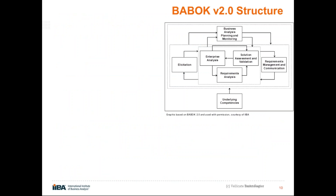Let's see how IIBA has changed the structure of BABOK to meet this enhanced role of a business analyst. This was the structure of BABOK 2.0, which had six knowledge areas and underlying competencies. Those knowledge areas were: enterprise analysis — identifying the business need, identifying gaps in capabilities, identifying possible solutions, recommending the best solution, and developing the business case.